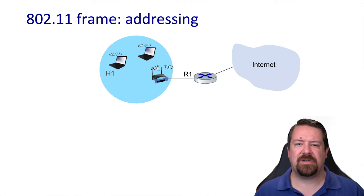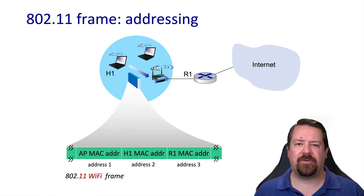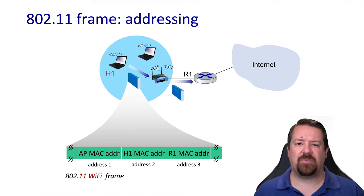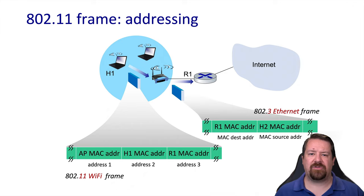In this addressing example, H1 transmits a frame to the access point in infrastructure mode, using only the first three addresses. The destination of the wireless transmission is the access point's MAC address, and the sender is H1's MAC address. Within the subnet, the destination is the router's gateway address, so the R1 MAC address is used in the third address field. That way, when the wireless access point constructs the wired Ethernet header, it knows what MAC address to use in the destination field — the source host's MAC address and the router interface MAC address, just as in an all-wired Ethernet environment.